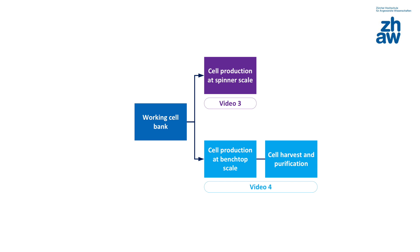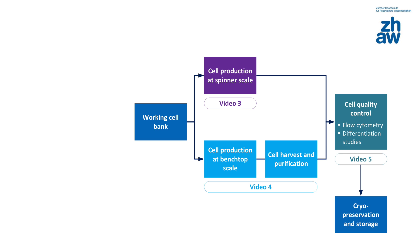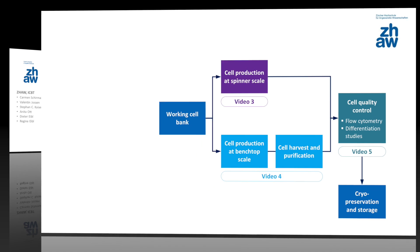Stem cell differentiation by shear stress can occur in stirred cultivation systems with microcarriers, as well as in harvesting procedures. To prevent this, cell quality is monitored. In video number five, common analytical methods are briefly introduced. These include flow cytometric analyses and differentiation studies.